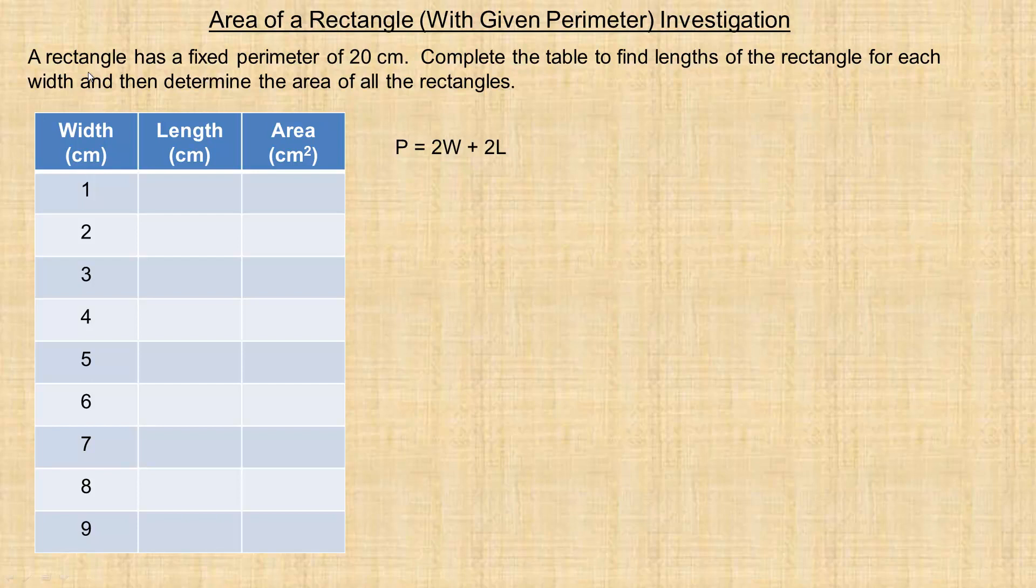We have to fix it at something, so I've chosen 20 here. What we're going to do is say if the width of the rectangle was 1, what is the length? And then if the width of the rectangle is 2, what would the length be? And then we'll find what the areas would be.